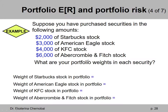Let's look at another example in which you're asked to calculate portfolio weights. Here we have four different companies and we're buying shares of stock from each of them. We are not given the number of shares and the prices per share. Instead, we are given the total amounts of money that we spend to buy the shares of stock from each of these companies: $2,000 of Starbucks stock, $3,000 of American Eagle stock, $4,000 of KFC stock, $6,000 of Abercrombie and Fitch stock. What are your portfolio weights in each security?